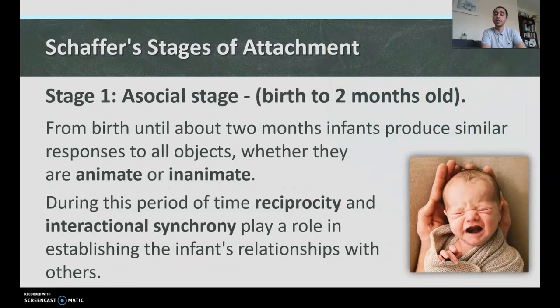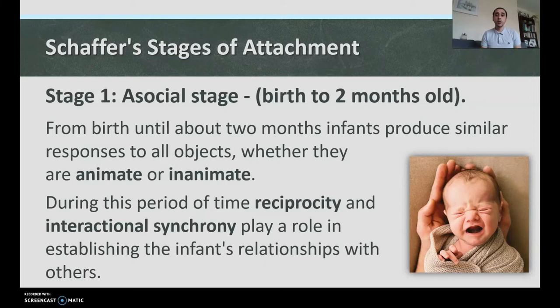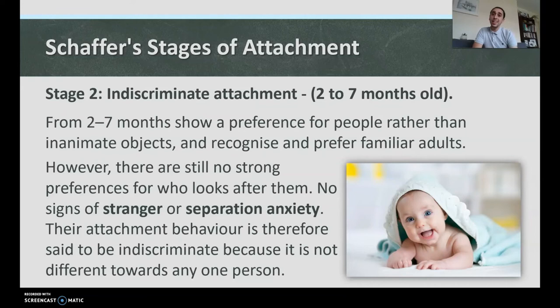Stage one is the asocial stage, from birth to two months. From birth until about two months, infants produce similar responses to all objects — whether animate or inanimate. They don't show a preference towards humans; a baby can sit there laughing at a chair. During this period, reciprocity and interactional synchrony play a role in establishing the infant's relationship with others. Asocial means not social — at this stage babies show no particular preference for animate or inanimate objects.